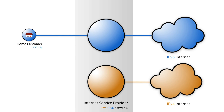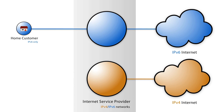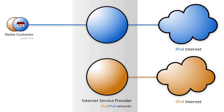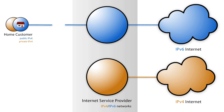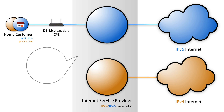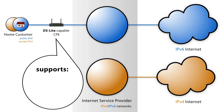DS Lite solves this challenge by giving customers native public IPv6 addresses and private NATed IPv4 addresses. The customers need a native IPv6 connection with a DS Lite-capable CPE, supporting IPv6, tunnelling, and IPv4.